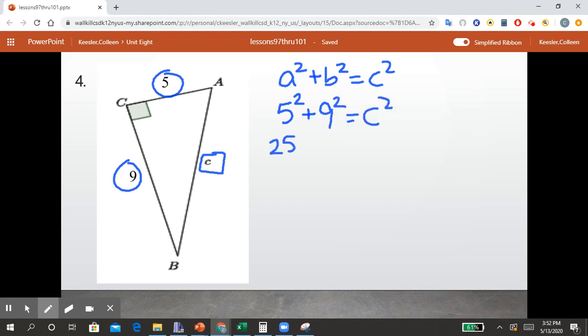We know 5 squared is 25. We know 9 squared is 81. Add those together. Five and one is six, and two and eight is 10. So it's 106 equals C squared. I don't know of that being a perfect square. So I'm going to use my calculator.